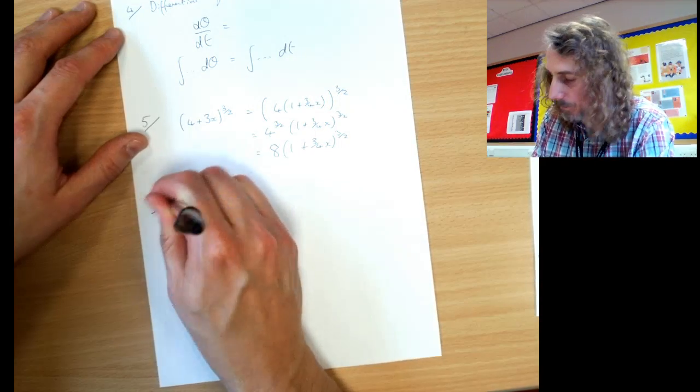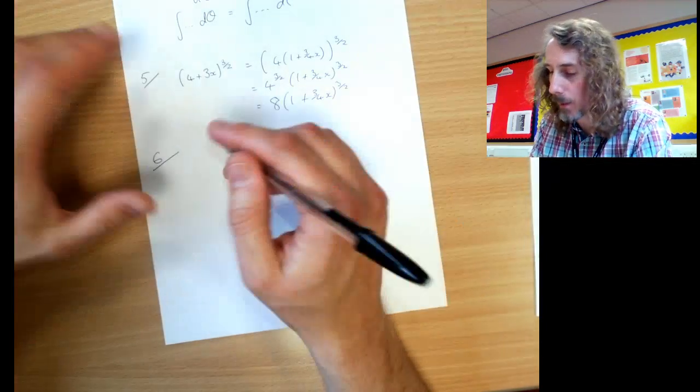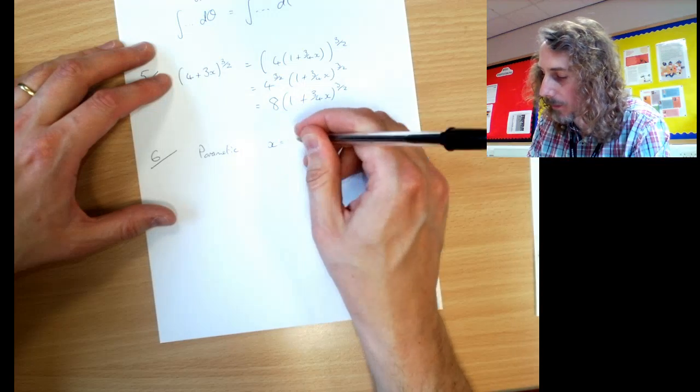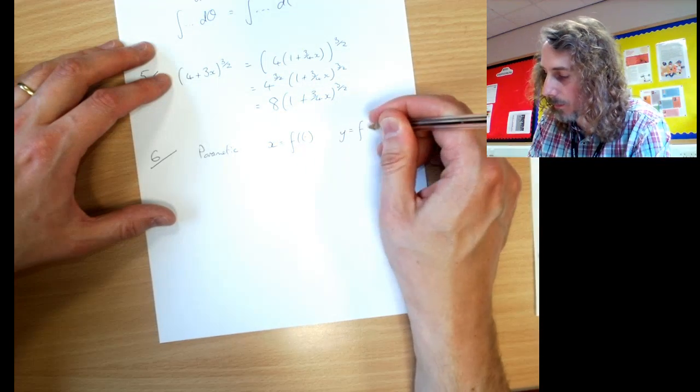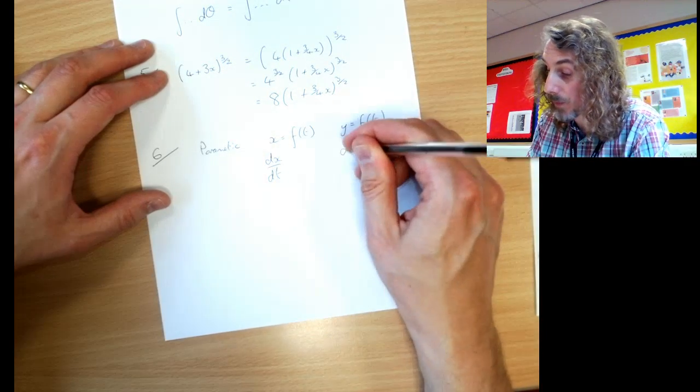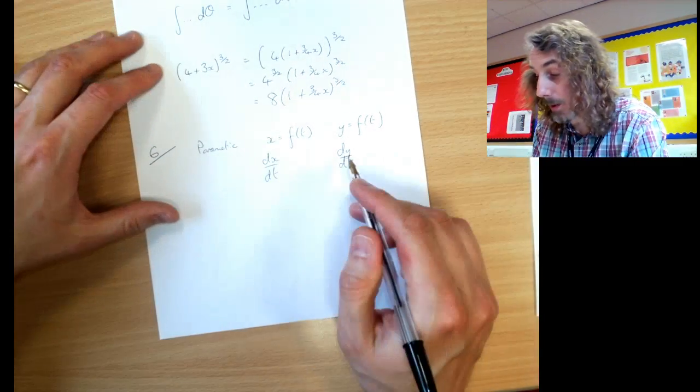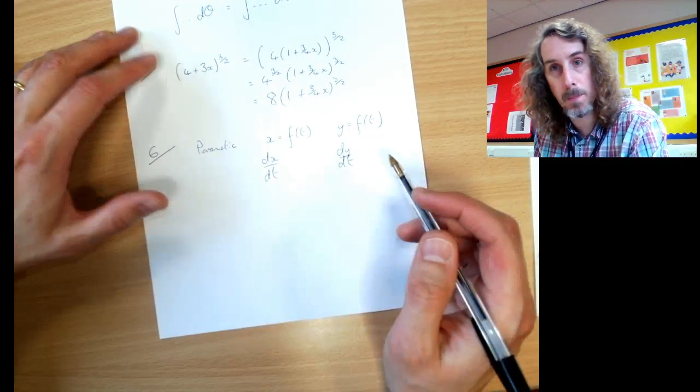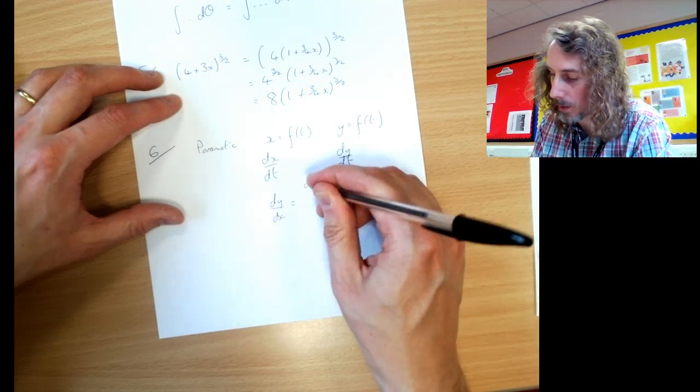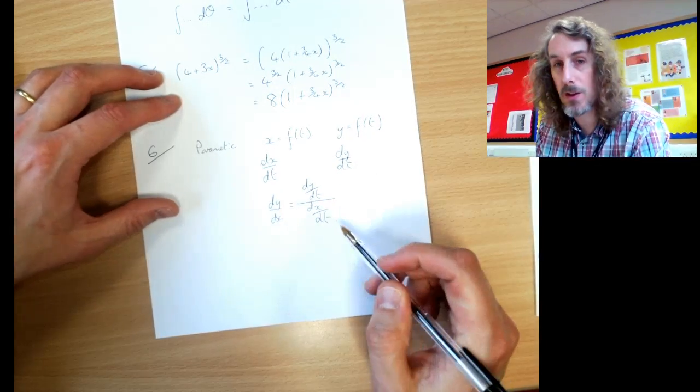Last one. Number 6 is for parametric equations. You're going to have x as a function of t and y as a function of t or theta. You're then going to write dx by dt and dy by dt. If you're not careful, you'll think it's that one over that one because you work left to right. But remember, dy by dx has got y on the top and x on the bottom. So it's dy by dt over dx by dt. Make sure you get them the right way around.